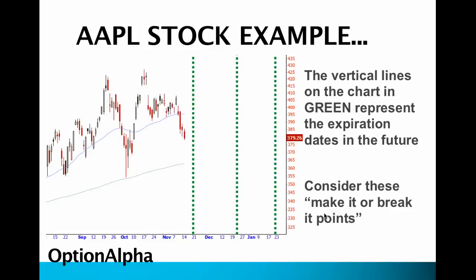So really you want to consider these the make-it-or-break-it points. If you buy an option contract for December expiration, which is this middle green line here, then that's the point at which either the underlying stock is going to move far enough for you to make a profit or it's not, and you're going to have to make a decision whether you want to get rid of that contract or whether you want to exercise it. Remember that you can actually get rid of your options contract by reversing the order — we've gone over those in different video tutorials.